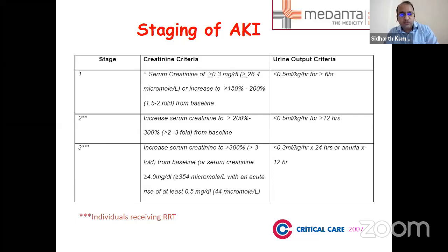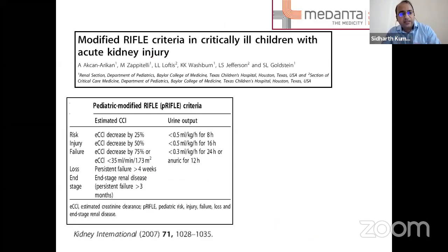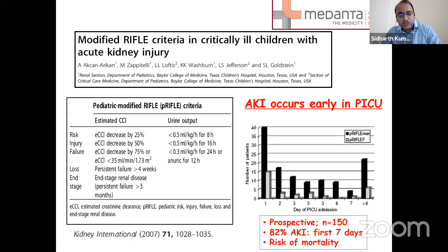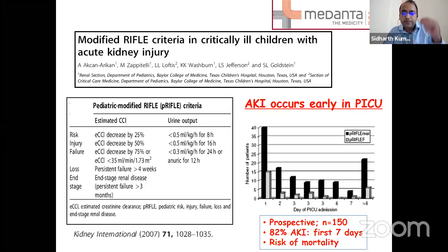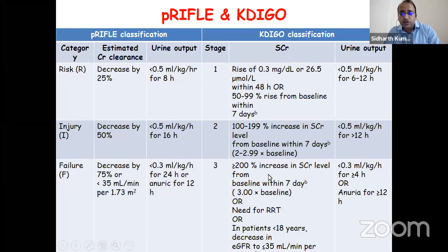That first definition was planned to suit all age groups. A study published from Texas modified the RIFLE criteria used in adults into pediatrics, creating a Pediatric RIFLE criteria, defining RIFLE as fall in estimated creatinine clearance or reduction in urine output. This study elegantly showed that acute kidney injury occurs early in the PICU—within the first seven days. AKI, fluid overload, and mortality all occur early in the pediatric ICU, and AKI is an independent predictor of mortality, especially in ICU children.